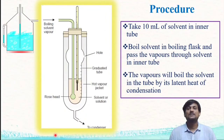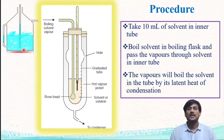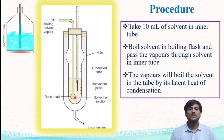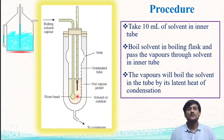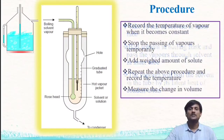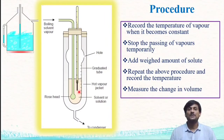Let's look at the procedure involved in the Lansberger and Walker method. First, we take 10 ml of solvent in the inner tube. Next, we take solvent in the boiling flask and boil it. The vapors formed in the boiling flask are passed into the solvent through the rose head tube. Due to the latent heat of condensation, there is boiling of the solvent. When the solvent boils, the temperature becomes constant — this constant temperature indicates the boiling point of the solvent.